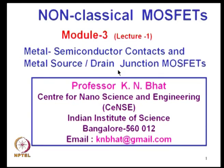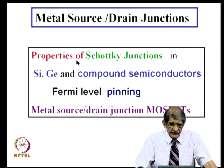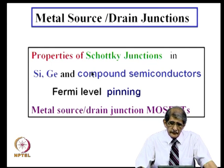We start with module 3 of the non-classical MOSFET series. This module is on metal semiconductor contacts and metal source drain junction MOSFETs — that is, instead of p-n junctions, we have metal semiconductor junctions as the source and drain. Here we will discuss the properties of Schottky junctions in silicon, germanium, as well as in compound semiconductors.